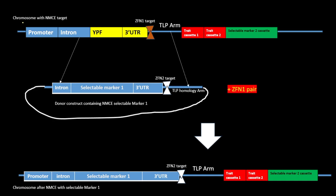Chromosome-level modifications with NMC targets and similar applications all share a similar approach: cut a particular genome region, introduce new DNA, and use zinc finger nucleases for those specific applications. Now, let us move on to the next tool — TALENs.